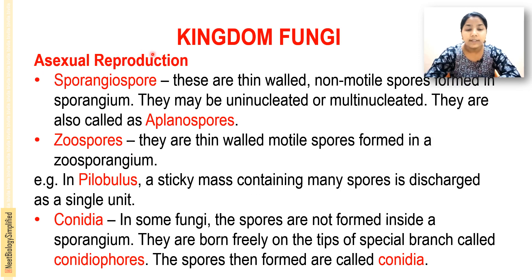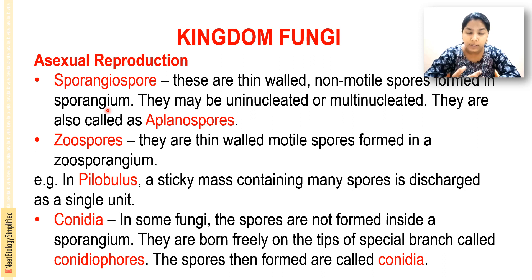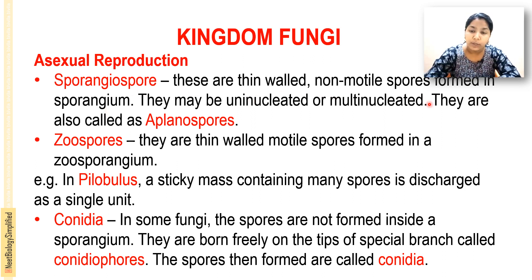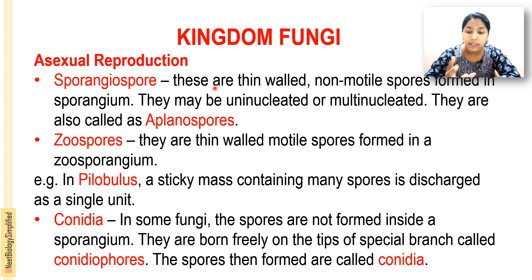Next is asexual reproduction. Sporangiospores are thin-walled, non-motile spores formed in a sporangium — a sac-like structure. Non-motile means they are not capable of moving. They may be uninucleated or multinucleated, and are also called planospores.